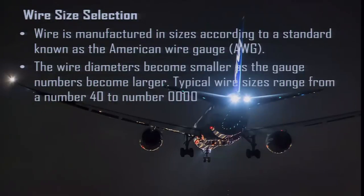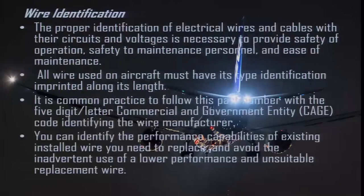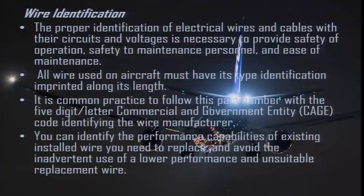Wire shielding: with the increase in highly sensitive electronic devices on modern aircraft, it has become very important to ensure proper shielding for many electric circuits. Shielding is the process of applying a metallic covering to wiring and equipment to eliminate electromagnetic interference (EMI). EMI is caused when electromagnetic fields induce high-frequency voltages in a wire or component, which can cause system inaccuracies or even failure. Wire is manufactured in sizes according to the American Wire Gauge (AWG) standard — wire diameter becomes smaller as the gauge number becomes larger, with typical sizes ranging from number 40 to number 0000.